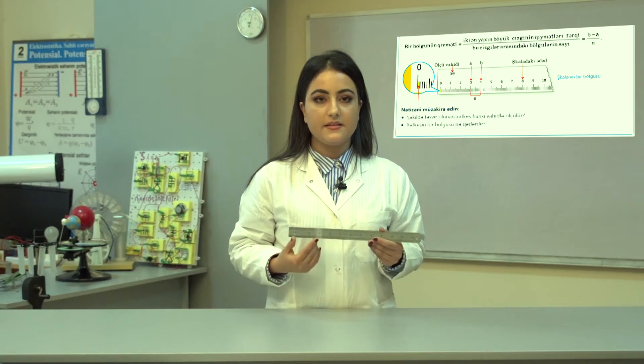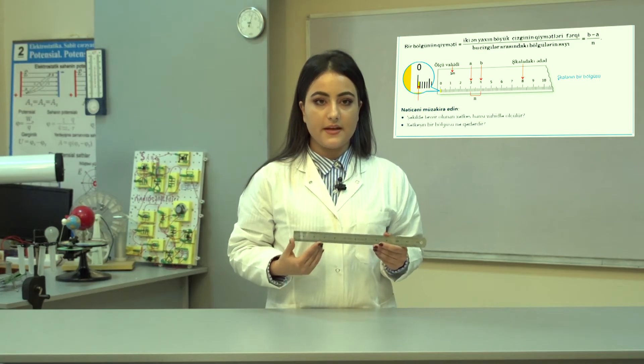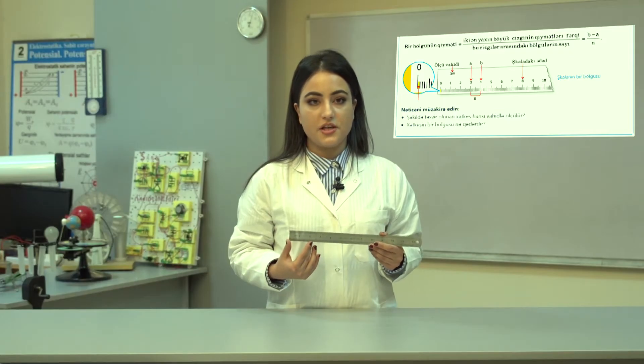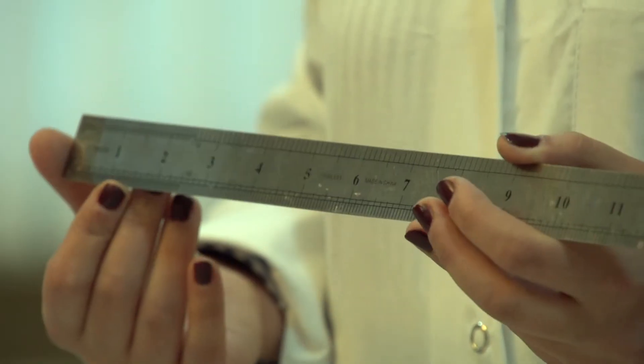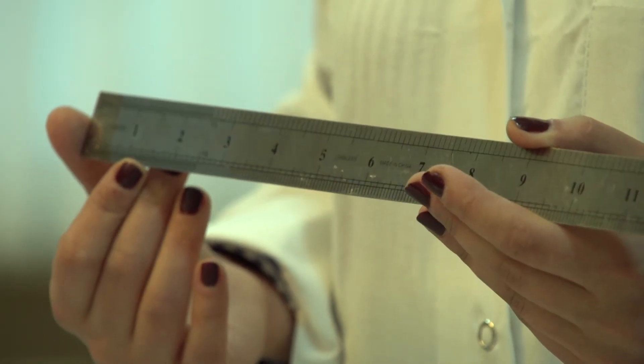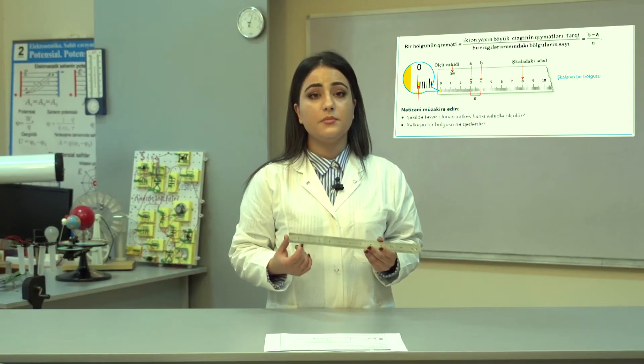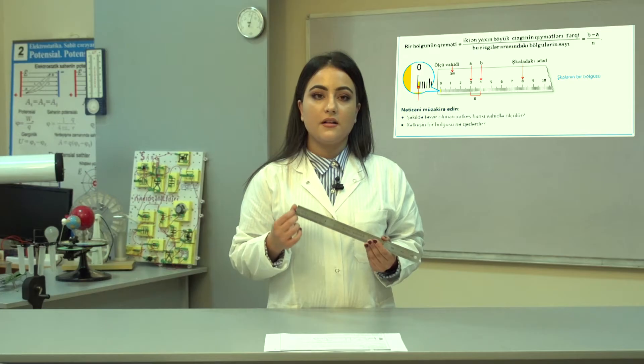Daha sonra aldığınız nəticəni işvərəqinizdə qeyd edirsiniz. Təyin etdiyiniz fərqdə şiqalanın neçə bölgüsü olduğunu təyin edin və tapdığınız nəticəni işvərəqində qeyd edin. Təyin etdiyiniz fərqi bu bölgülərin sayına bölün və Xətkəşin bir bölgüsünün qiymətini təyin etmiş olun. Aldığınız qiymətləri işvərəqinizdə qeyd edin.